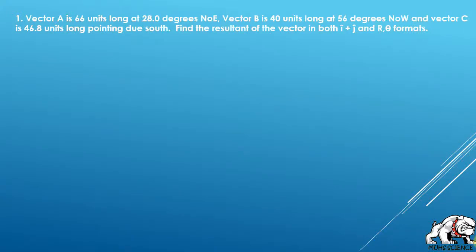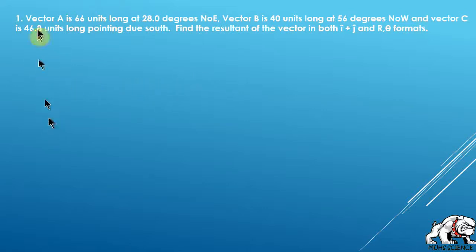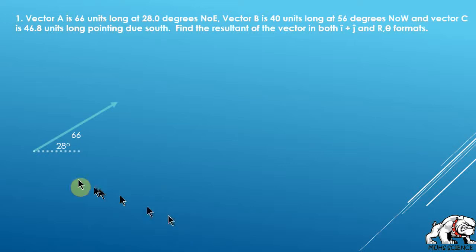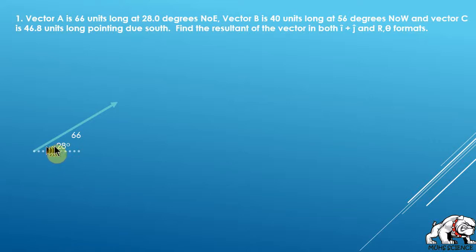In this video we're taking a look at an initial vector problem. We have three different vectors described, and the first thing we do is lay out a picture of what this looks like. Vector A is 66 units long at 28 degrees north of east, so we draw a dotted line going directly east, mark the 28-degree angle, and draw the vector at 66 units long.